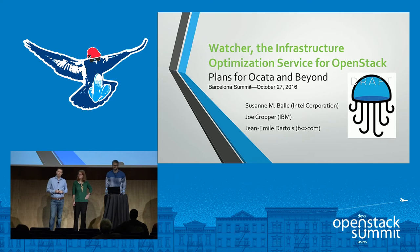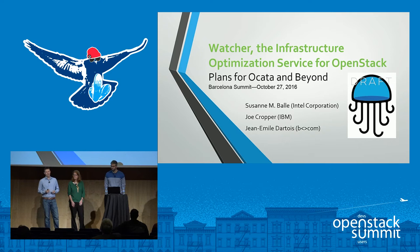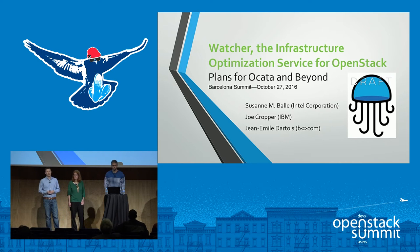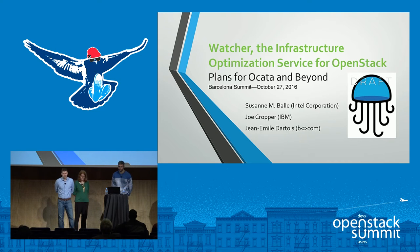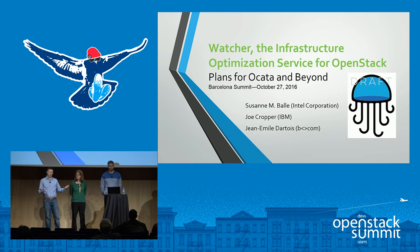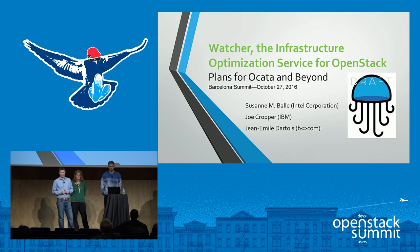We want to talk about the resource optimization service for OpenStack. We want to give you a rundown of what are some of the key features and goals of Watcher, where have we been historically, and where do we see this project going in the future. Also shown here is the OpenStack logo known as the jellyfish for the Watcher project. The jellyfish is actually the most energy efficient swimmer of all animals, so we thought that was a good pairing with data center optimization.